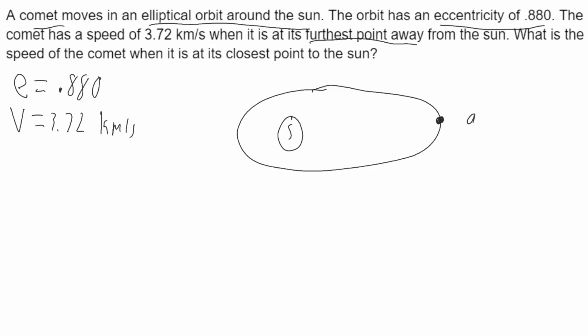And the comet at its furthest point will be here. Now, this point here is what's known as the apocenter. So I'll be labeling this with A.